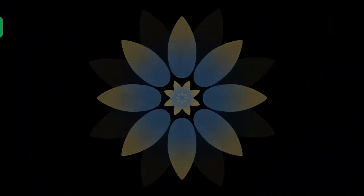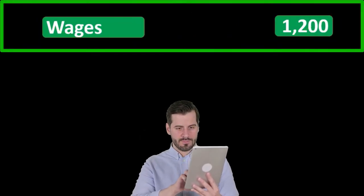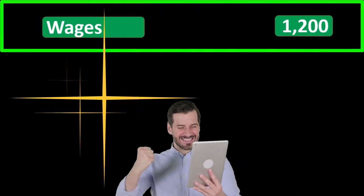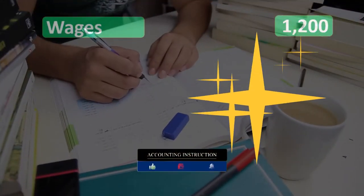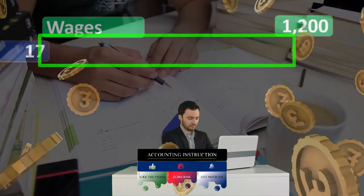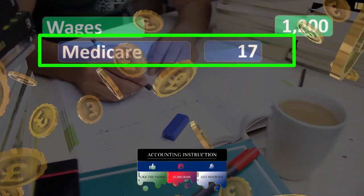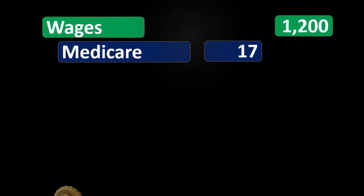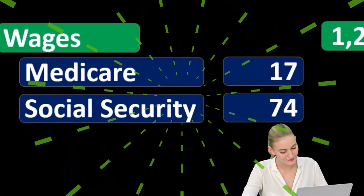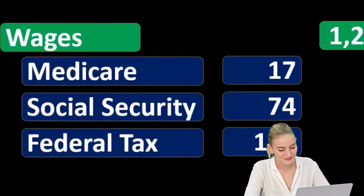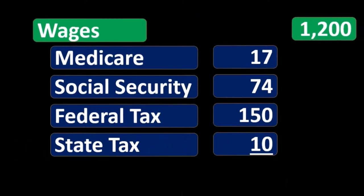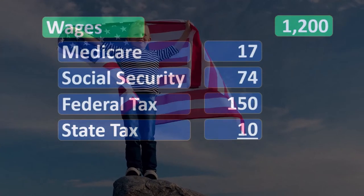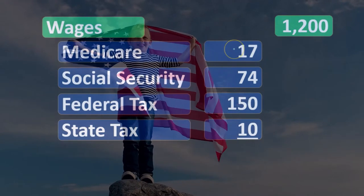Let's take a look at an example. If we had total wages or gross pay of $1,200, we would then be removing some things as the employer — some things that are going to be required to be removed by government, including tax withholdings, and some things that might be benefits to the employees, such as retirement plan contributions or health care. So we would have Medicare withheld as part of our payroll taxes from the employee wages, Social Security withheld from the wages, federal income taxes withheld by the employer, and possibly state income taxes depending on the state.